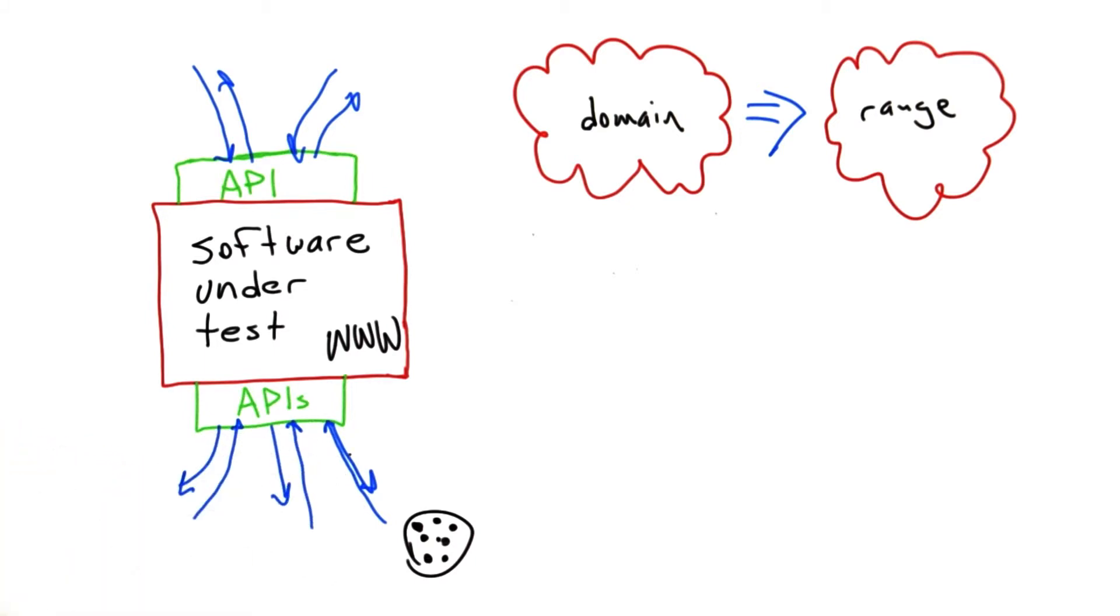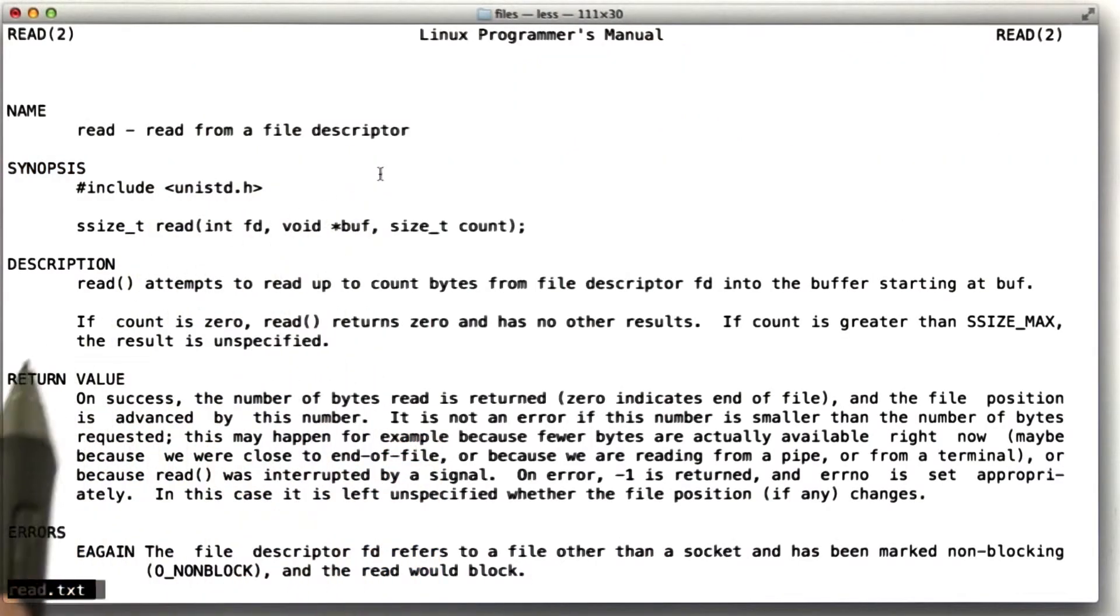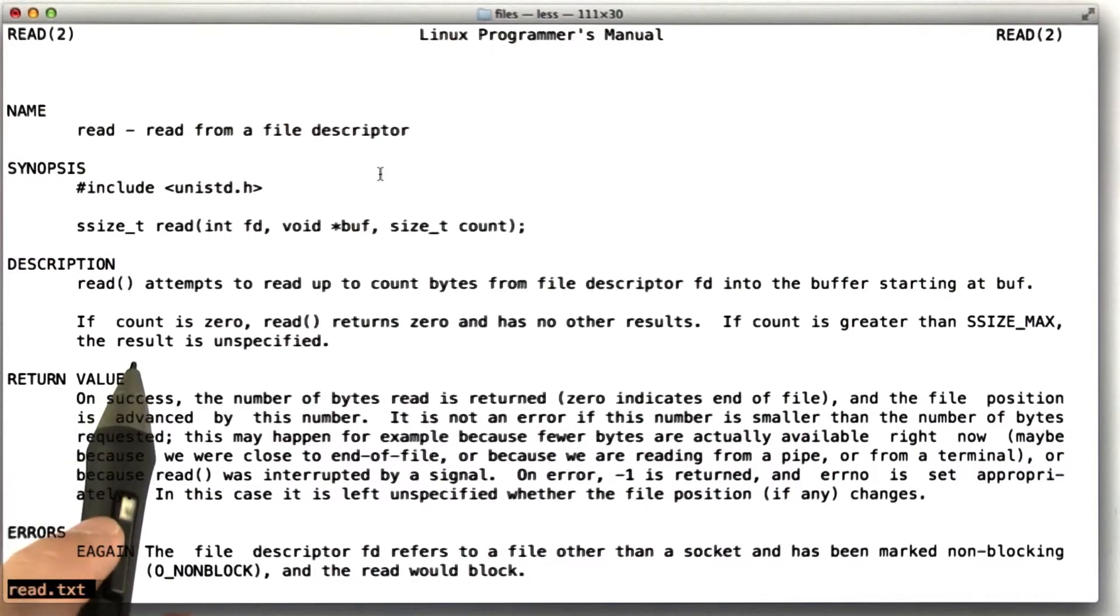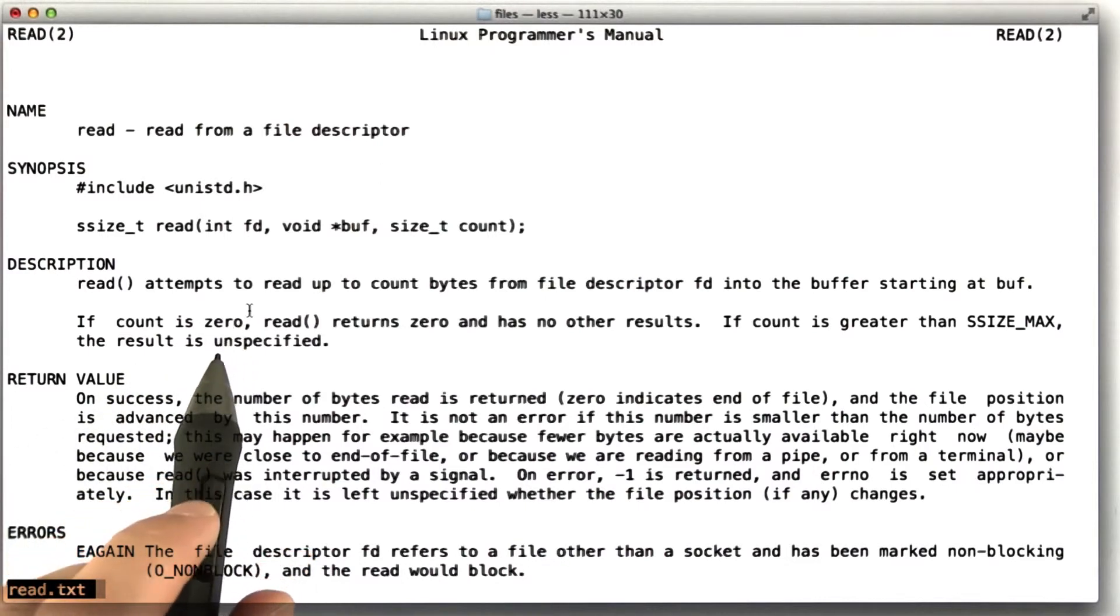So what we're going to now is go back to our friend, the Unix read system call. Let's take another quick look at the Unix read system call. And so, this is how Unix processes read from files. And of course, real Unix programs are issuing calls to read constantly, maybe hundreds of times per second.